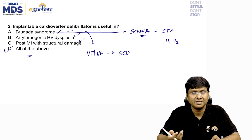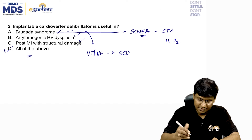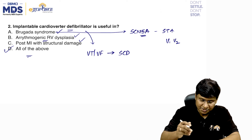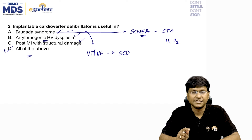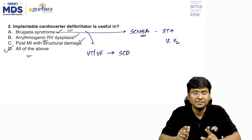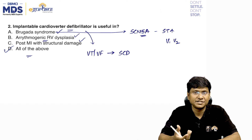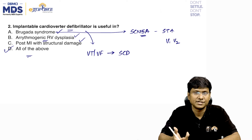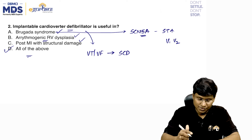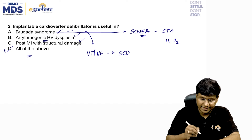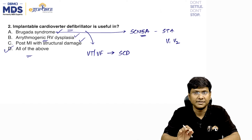Arrhythmogenic right ventricular dysplasia (ARVD): the right ventricular myocardium is replaced by fibro-fatty tissue, which is highly arrhythmogenic and responsible for VT and VF causing sudden cardiac death. These patients also require an implantable cardioverter defibrillator.